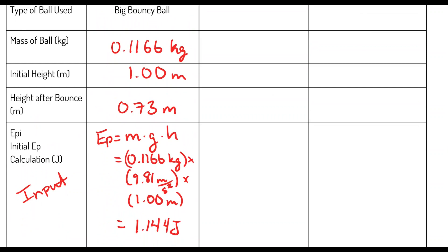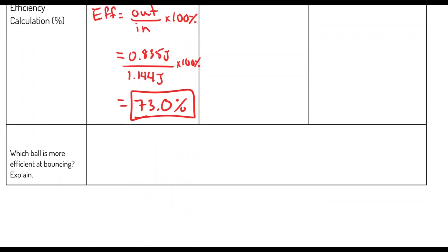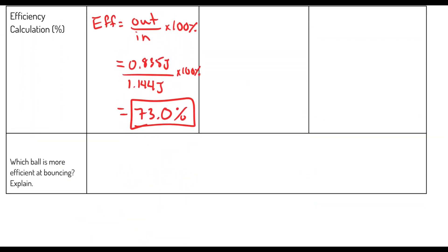Here's a hint: this efficiency percentage should resemble your height after the bounce — it won't be exactly it, but it'll be pretty close. Your job is to get the information for any two of the other six balls, do the calculations for them, and compare my efficiency of the big bouncy ball to your two balls. Say which one is more efficient at bouncing, and give a quick explanation — it has to do with how much energy was preserved.